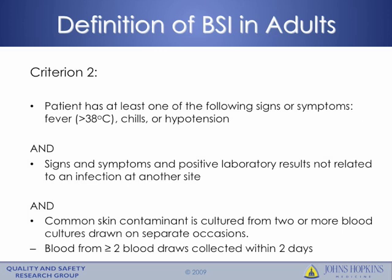Criterion 2 consists of three components: the patient has at least one of the following signs or symptoms — a fever greater than 38 degrees Celsius, chills, or hypotension; the signs, symptoms, and positive laboratory results are not related to an infection at another site; and a common skin contaminant is cultured from two or more blood cultures drawn on separate occasions. The definition of separate occasion is that blood from two or more blood draws was collected within two days. For example, if coagulase negative staph were isolated on Monday and then on Friday, this would not meet the definition because the two blood cultures are drawn too far apart.